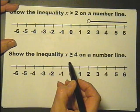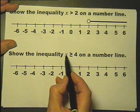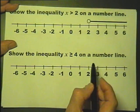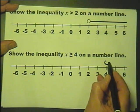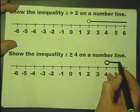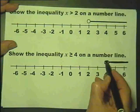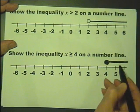Let's look at this one then. This one says show the inequality x is greater than or equal to 4. So again we draw a circle there and we draw a nice line there, but it includes 4 so we color that in, and that is it.